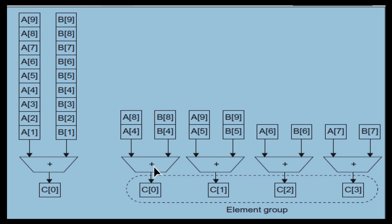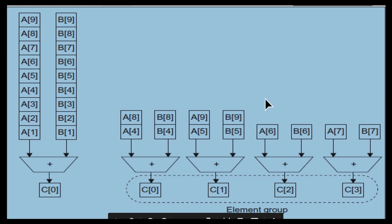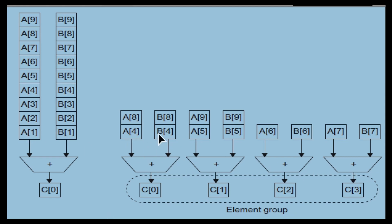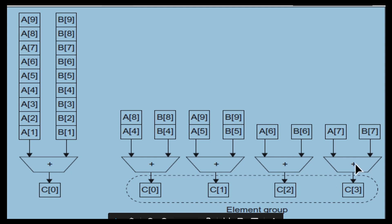In the second clock cycle, A4 B4 are added by the first ALU, A5 B5 by the second, A6 B6 by the third, A7 B7 by the fourth. In the third clock cycle, A8 B8 and A9 B9 are added. So the complete vector addition finishes in just three clock cycles, giving results C0 through C9. By increasing the number of processing elements, you reduce the time. This is called a vector pipeline.